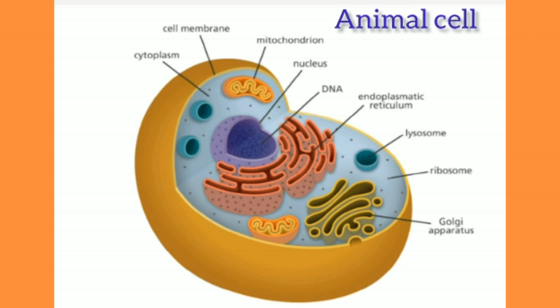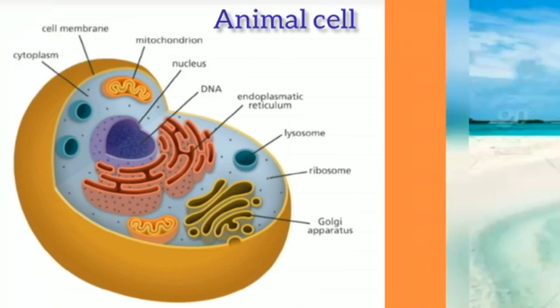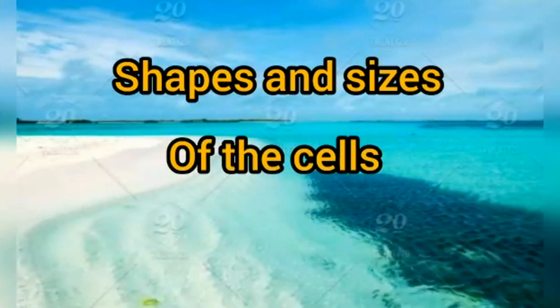Among these cell organelles, the nucleus is known as the brain of the cell because it controls all other activities of the cell organelles. Let us now learn about different shapes and sizes of cells.